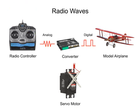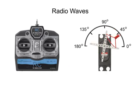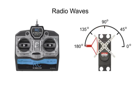Let's look at the operation of a servo motor in more detail. The horn of a servo motor can be activated to hold certain positions, and this position is set by the length of a radio pulse arriving from the radio controller.